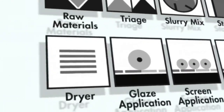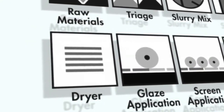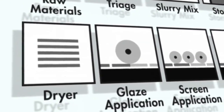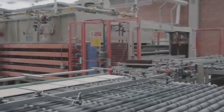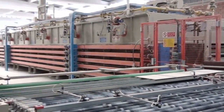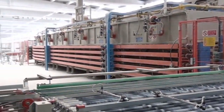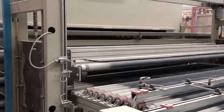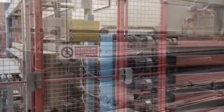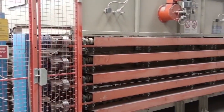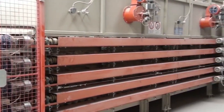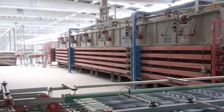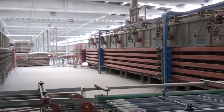After the body is formed, it is dried further to remove most of the remaining moisture. It is important to remove the moisture in order to keep the product stable during the cooking process in the kiln. This guarantees that the product will come out of the kiln as a solid, homogenous material free of physical weaknesses or defects.